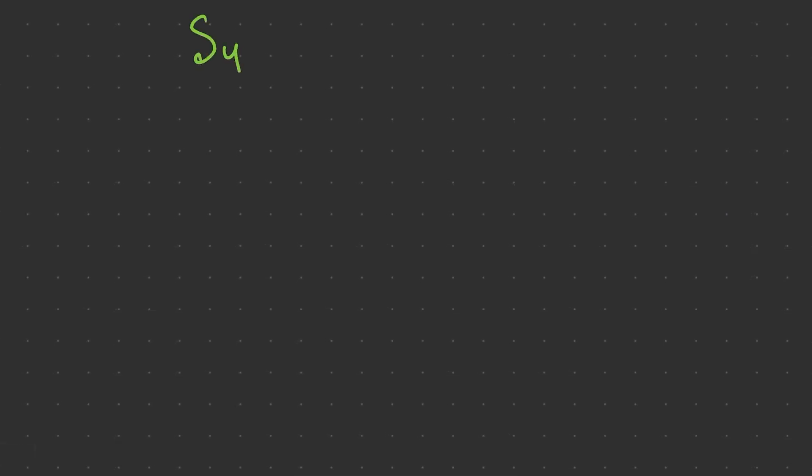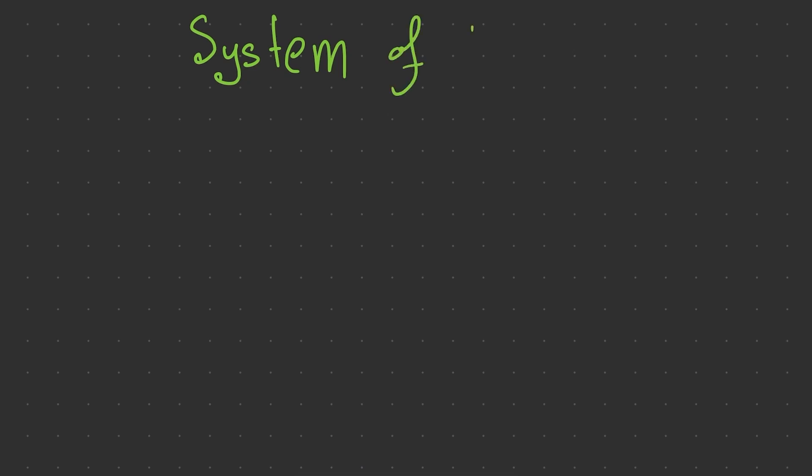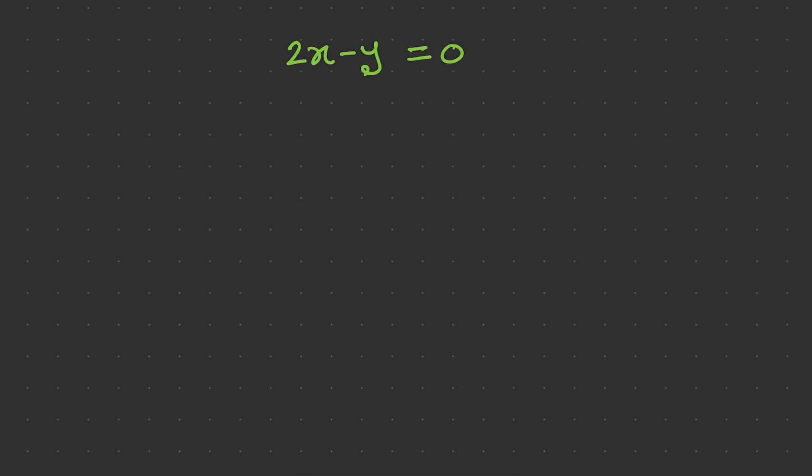Hello everyone and welcome to our tutorial on solving systems of linear equations. This is a continuation of our previous tutorial, so we are still talking about systems of equations. In this tutorial we are going to solve the system in a different way. Let's write two equations for the system: 2x minus y equals 0, and